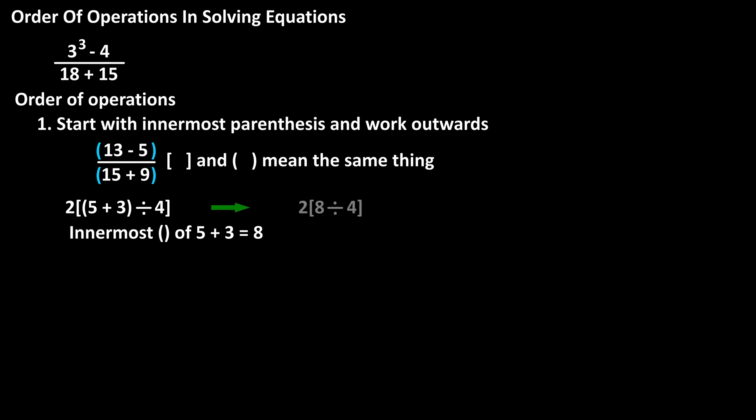Now we have 2 times the quantity 8 divided by 4. The next operation is the outer bracket of 8 divided by 4, which equals 2. And we have 2 times 2, which equals 4.